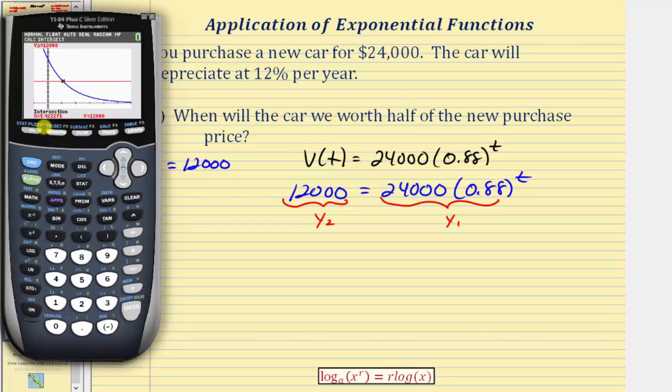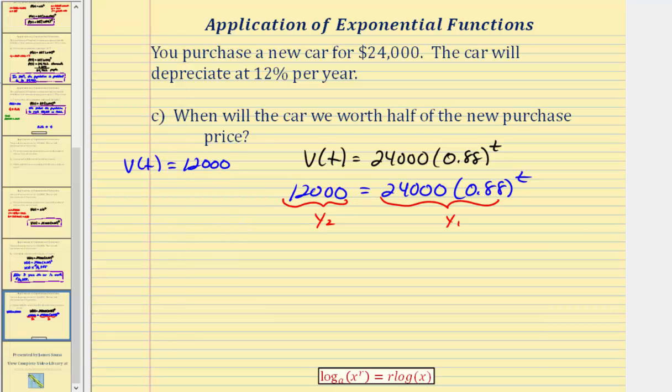So we have x is approximately 5.42, or in our case it would be t. So graphically, we have t is approximately 5.42 years.